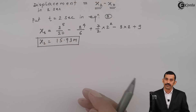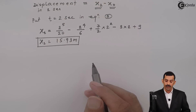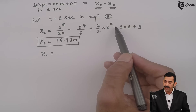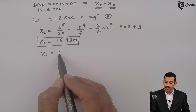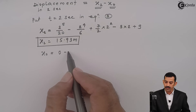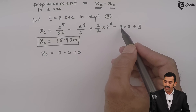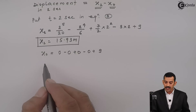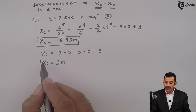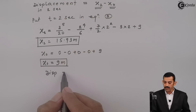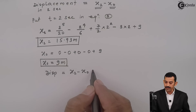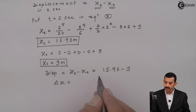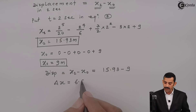Similarly, to find x₀, we substitute t = 0 seconds in the position equation. Every term with t becomes 0: (0⁵/20) = 0, (0⁴/6) = 0, (7/2)(0²) = 0, and 3(0) = 0. The only remaining term is the constant of integration, so x₀ = 9 meters. Now, displacement Δx = x₂ - x₀ = 15.93 - 9 = 6.93 meters.